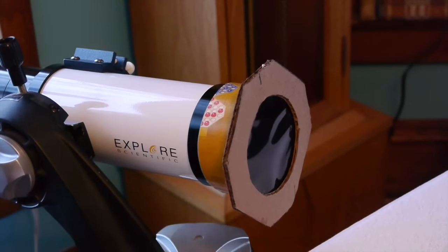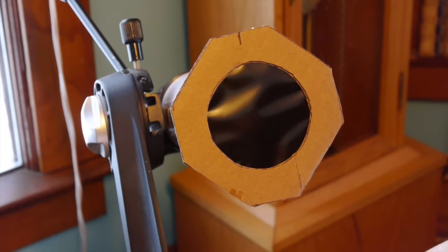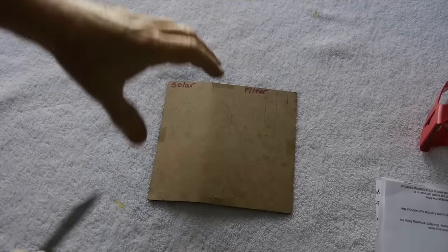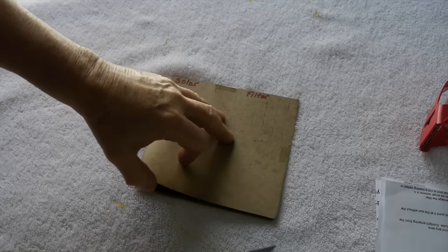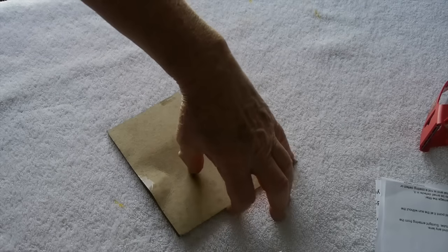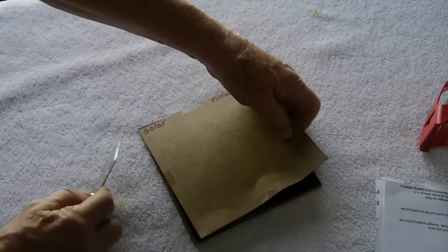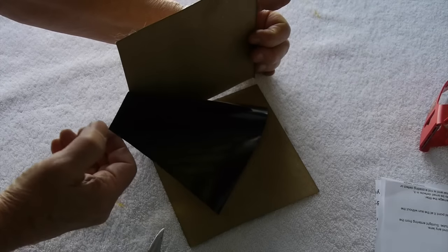This is what the filter is going to look like when it's finished. Next we're going to make this flat end piece that will hold the filter material. This is how that material was shipped to me in between two pieces of cardboard. I haven't opened it up yet, but it's about a six inch square piece.